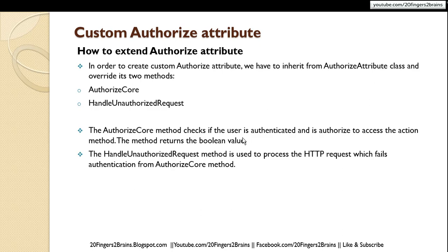When the result is true, the action method will be rendered with a view. If the result is false, then control goes to the HandleUnauthorizedRequest method, which is our second function.